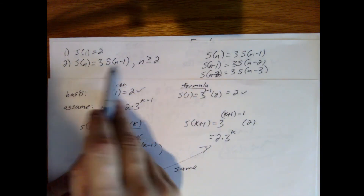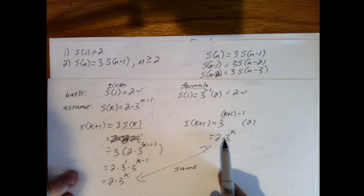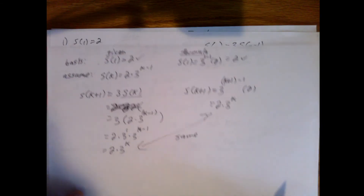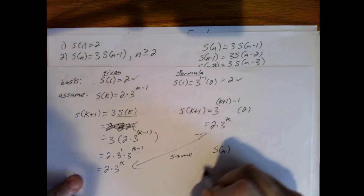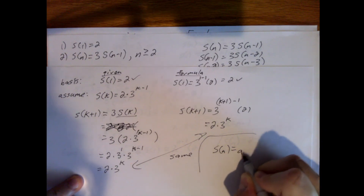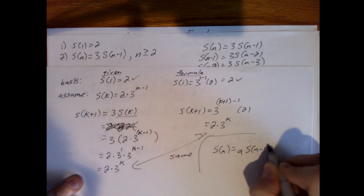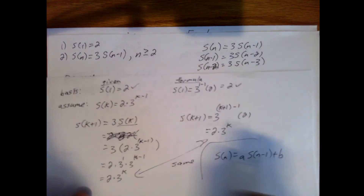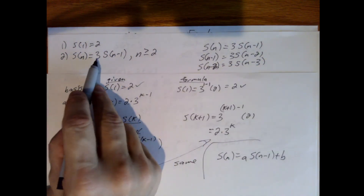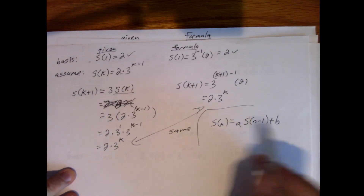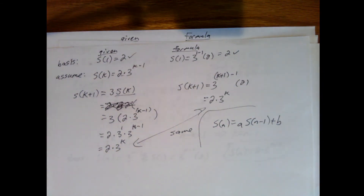This is easier to be comfortable with: you just take 2, multiply it by 3, multiply by another 3, and so forth. So those are two examples. In my next video I'll combine the approach where we have s of n equals a times s of n minus 1 plus b, where a is not 1 and b is not 0. This first example had a equals 1 and b equals 2; the second had a equals 3 and b equals 0. I'll combine those in the next video because it's a more challenging process.